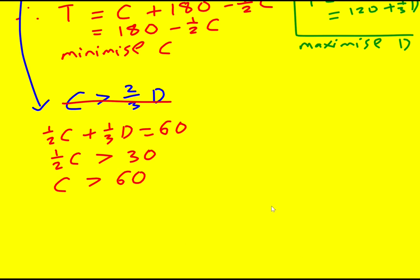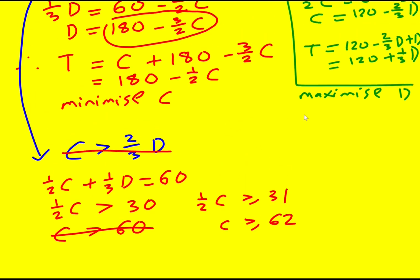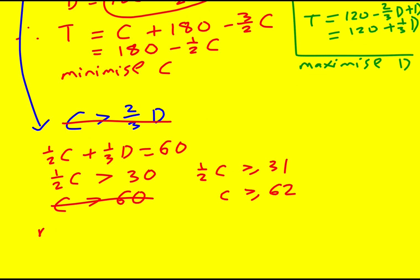And therefore C is going to be greater than 60. In fact, we need to do a little bit more than that, because I can't just say that C was greater than or equal to 61, because actually I need to be able to have it. Actually, one-half C is therefore going to be greater than or equal to 31, and C is going to be greater than or equal to 62. Now we're nearly there actually. So the minimum of C is going to be 62, and therefore the maximum of T is going to be 180 minus 31, which gives 149.